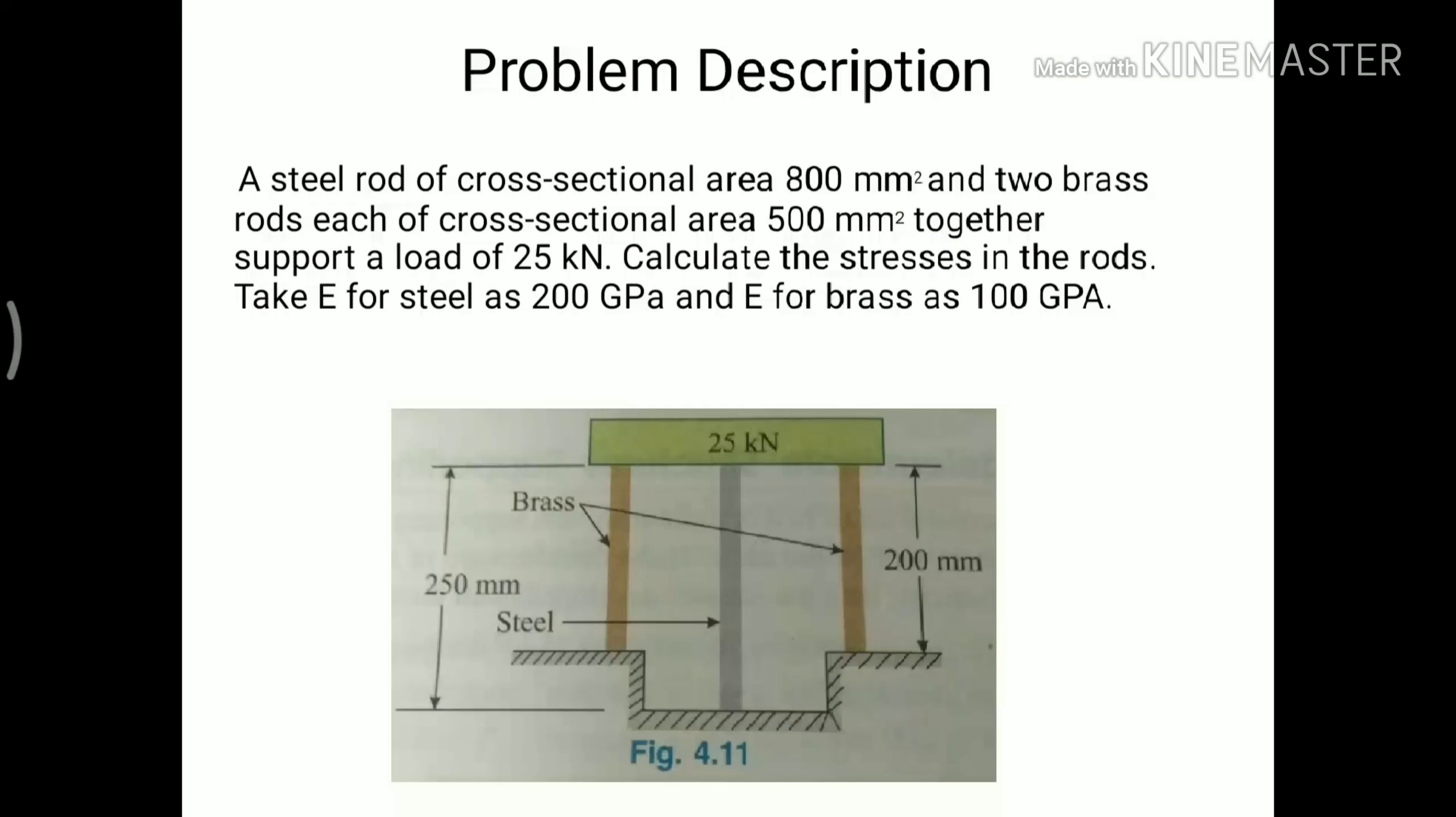A steel rod of cross-sectional area 800 mm² and two brass rods of cross-sectional area 500 mm² together support a load of 25 kN. Calculate the stresses in the rods. Take E for steel as 200 GPa and E for brass as 100 GPa.